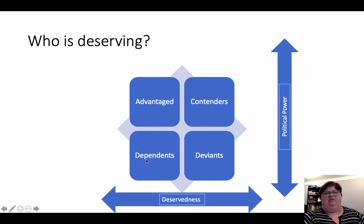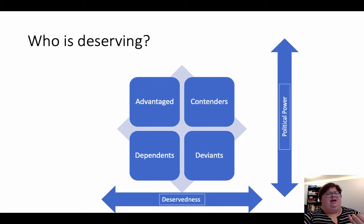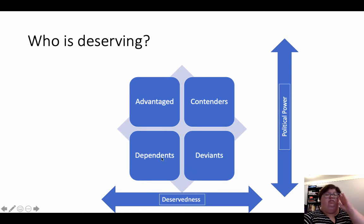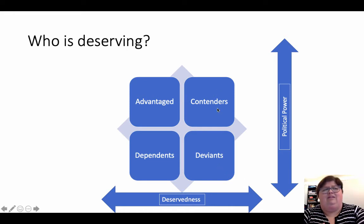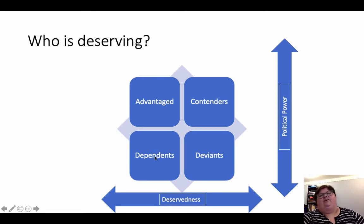Dependents, in the lower left quadrant, are groups that lack political power but are generally thought of positively — mothers, children, students, the disabled. They are seen as deserving but don't have a lot of political power. The benefits for dependents tend to be more explicit than those given to deviants or even contenders — we want to say we're helping the poor, we're helping mothers — but they're not as maximized as the advantaged, because they don't have the political power to drive the policy mechanisms.